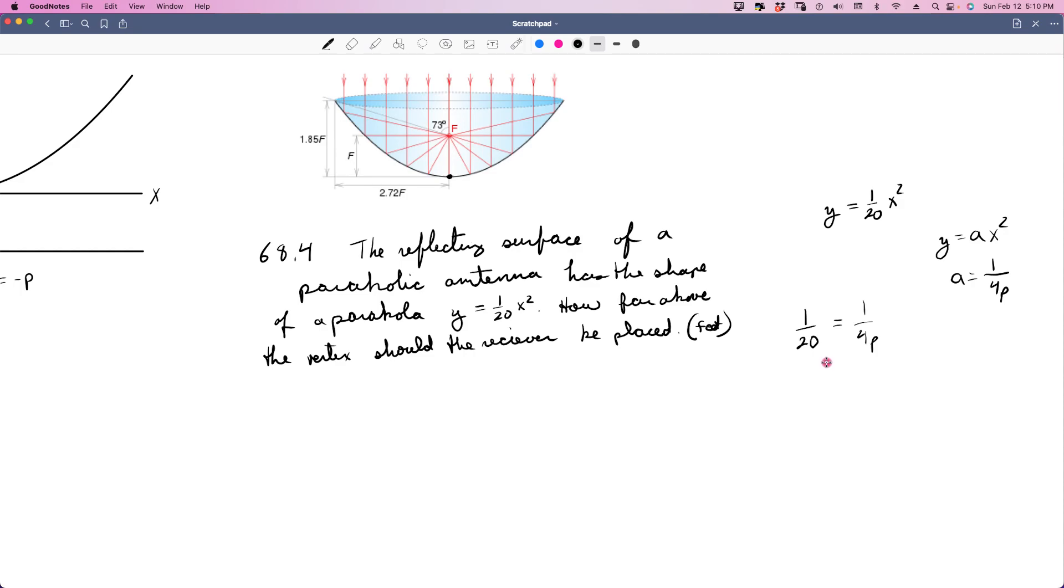Now p is going to be the distance between the focus and the vertex. So we just need to find the value of p here. So if 1 over 20 is equal to 1 over 4p, we just divide 20 by 4 and we get that 5 is the value of p. So that means that our focus is going to be 5 feet above the vertex. It's that easy.